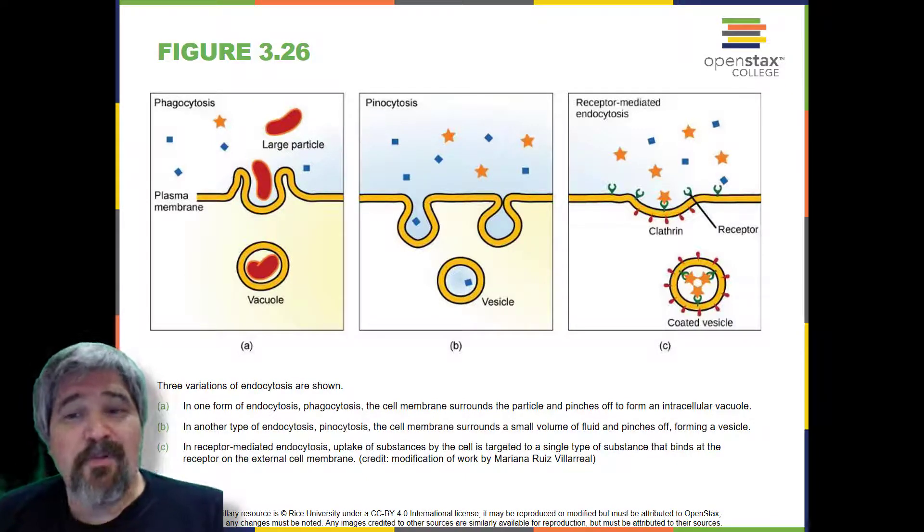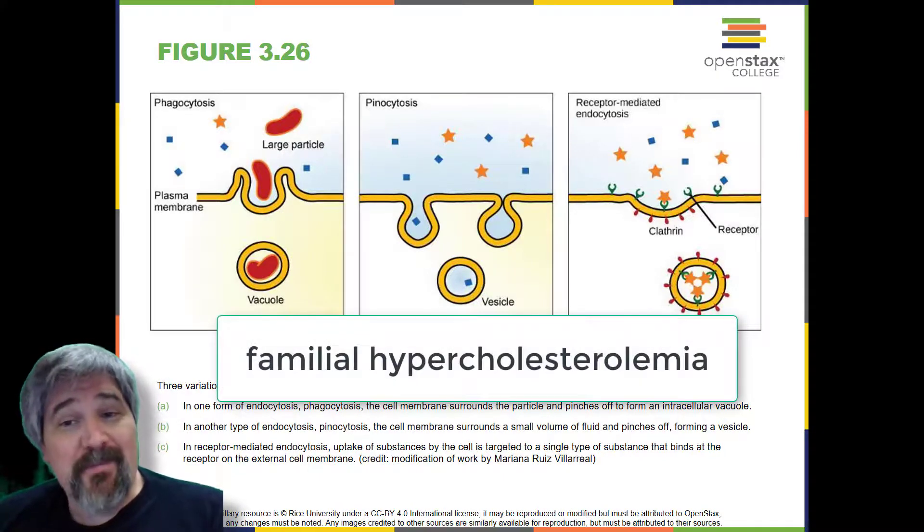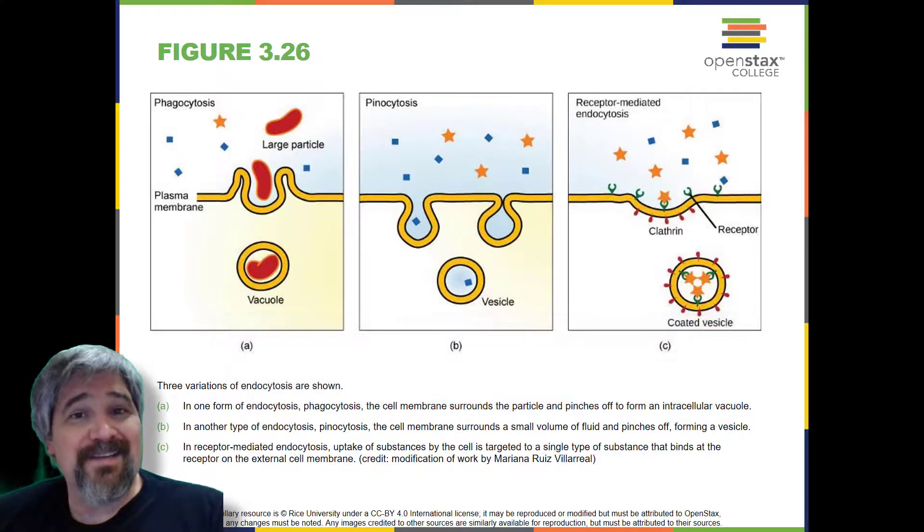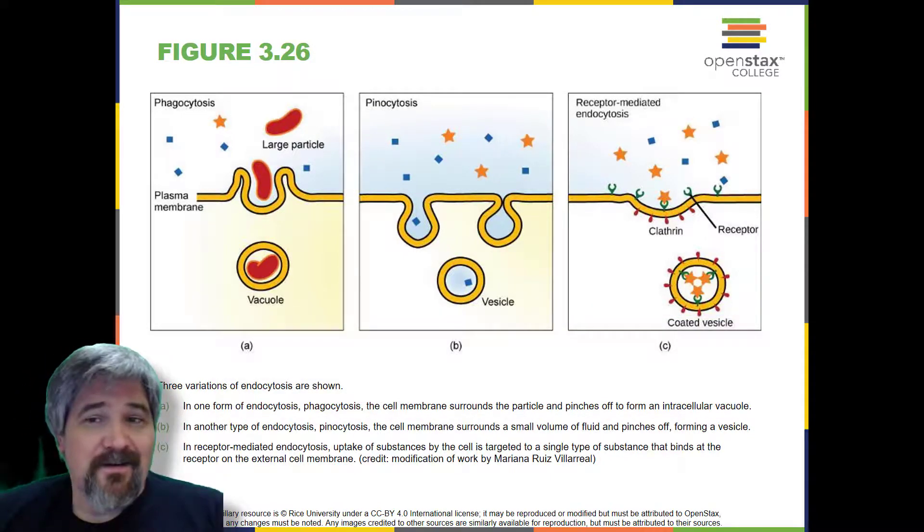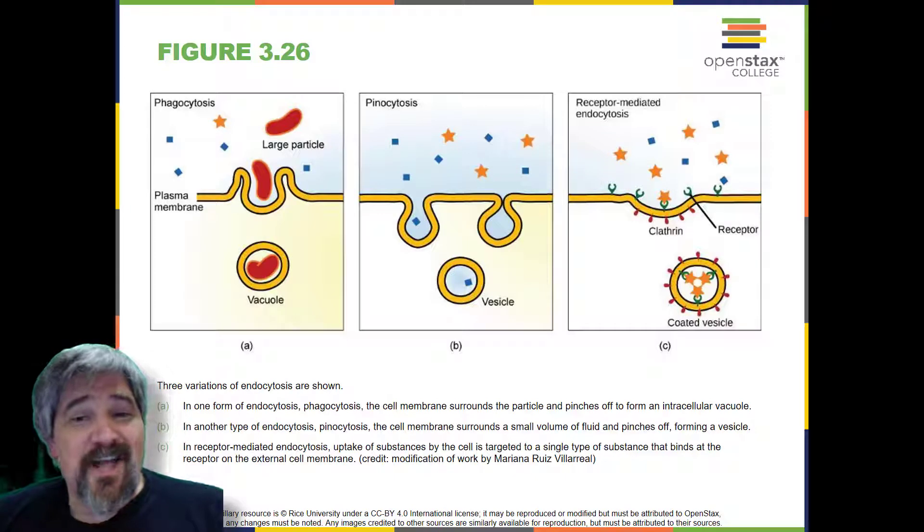In the human genetic disease familial hypercholesterolemia, the LDL receptors are defective or missing entirely. People with this condition have life-threatening levels of cholesterol in their blood because their cells cannot clear the chemical from their blood.